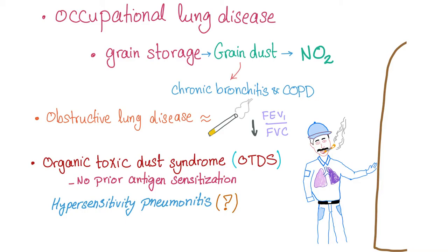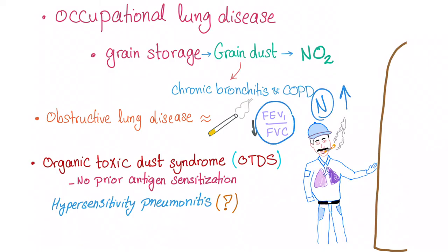Clinically, as well as when you do the tests, it's identical to cigarette smoking. We'll have an obstructive lung disease pattern with a low FEV1/FVC ratio. This is obstructive. Remember, restrictive lung disease will have a normal or high FEV1/FVC ratio. This condition goes mostly with obstructive lung disease.